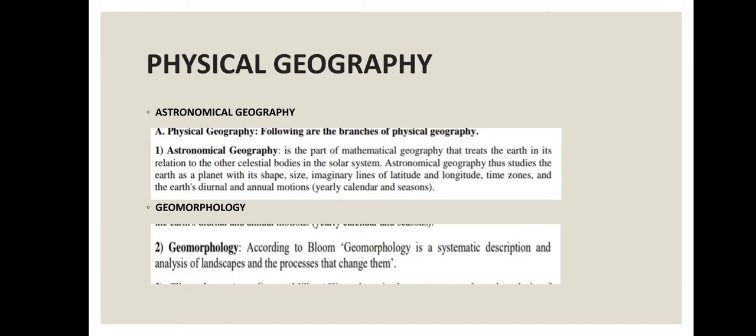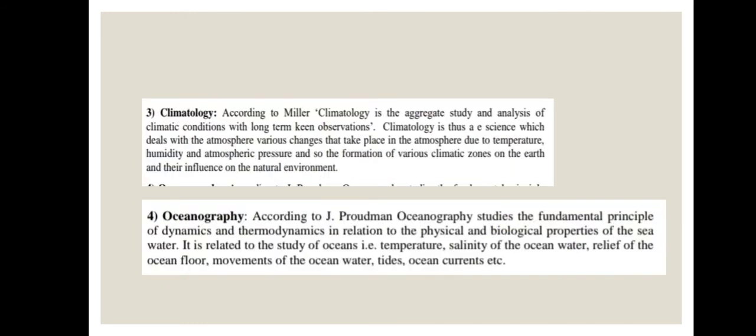The second branch is geomorphology. According to Bloom, geomorphology is a systematic description and analysis of landscapes and the processes that change them. It is a systematic explanation of landscapes — what these scenes are — and all the processes that cause change in these landscapes. The third branch is climatology.